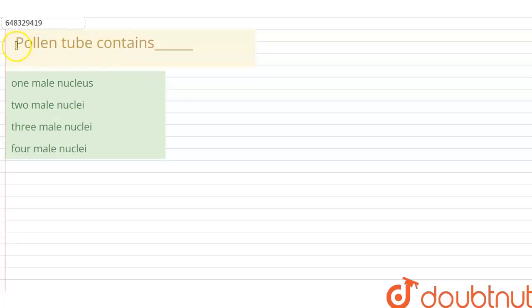The question given is pollen tube contains what. So here we have a question about the pollen tube. We have to answer pollen tube contains how many male nuclei or nucleus. There are four options given: first option is one male nucleus, second option is two male nuclei, third one is three male nuclei, and fourth one is four male nuclei.